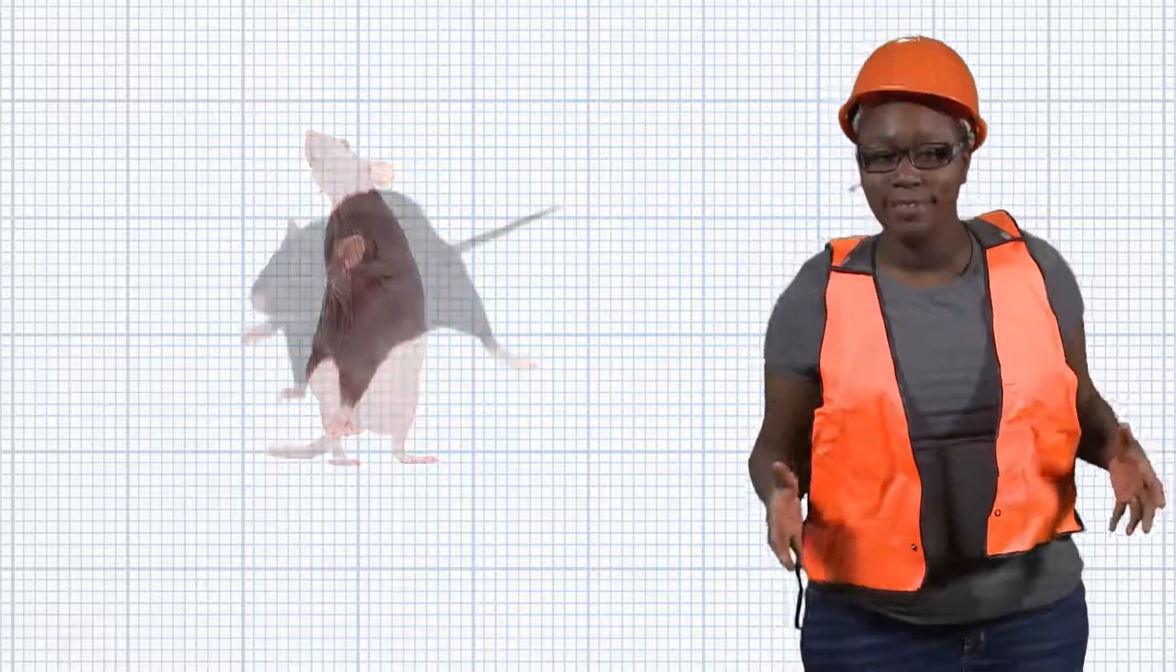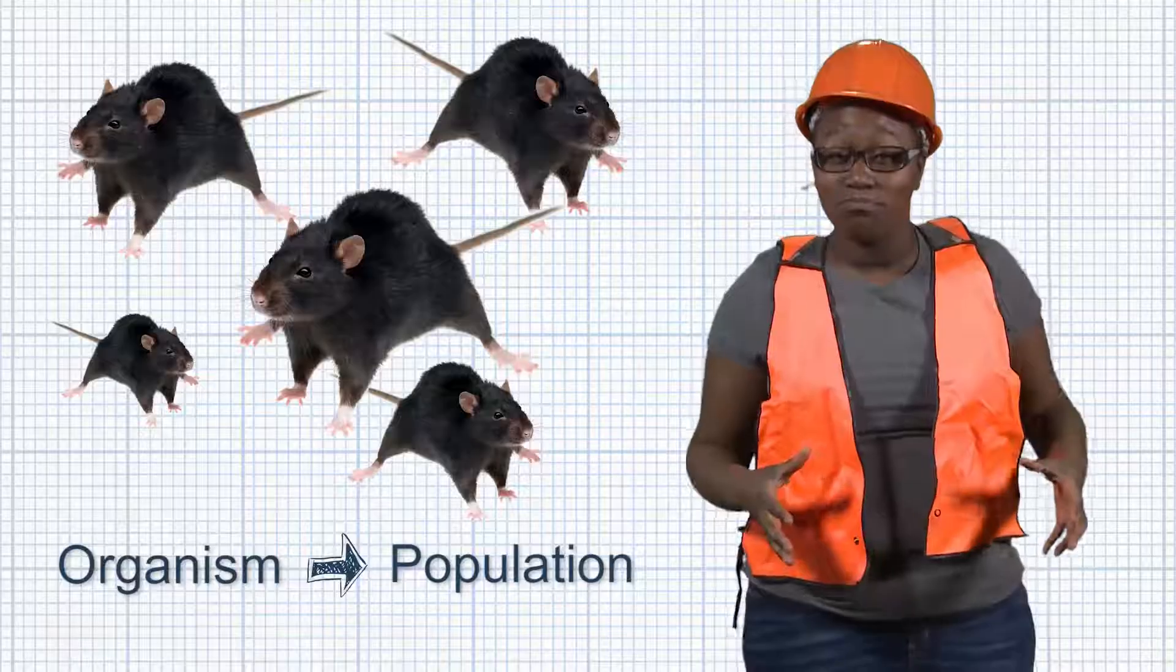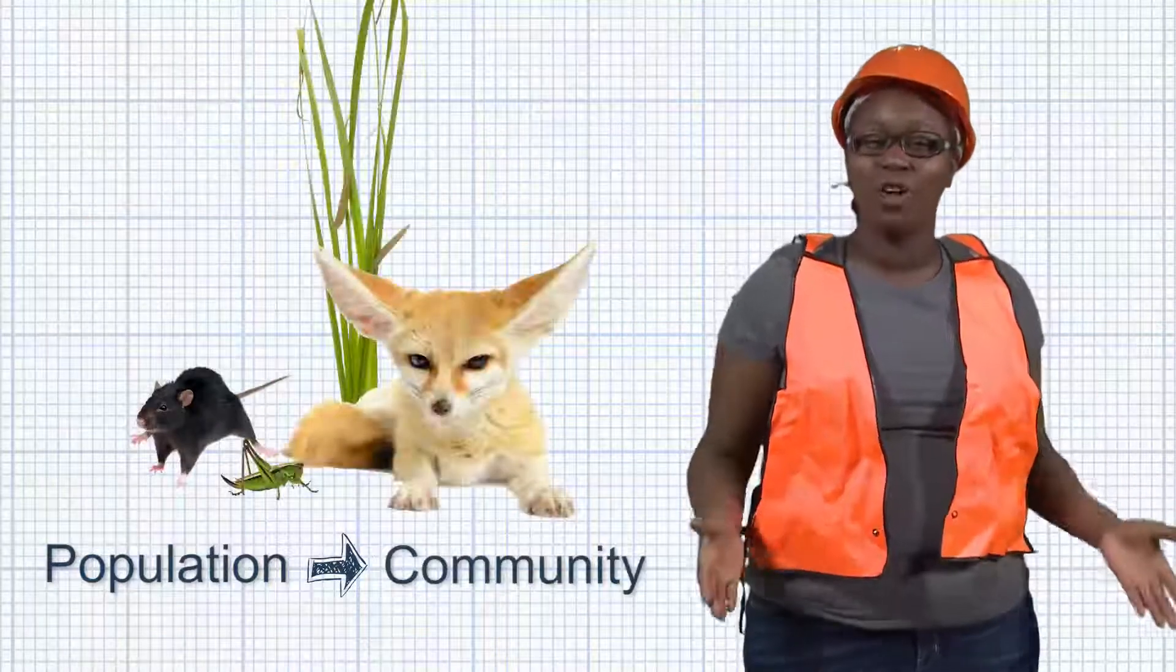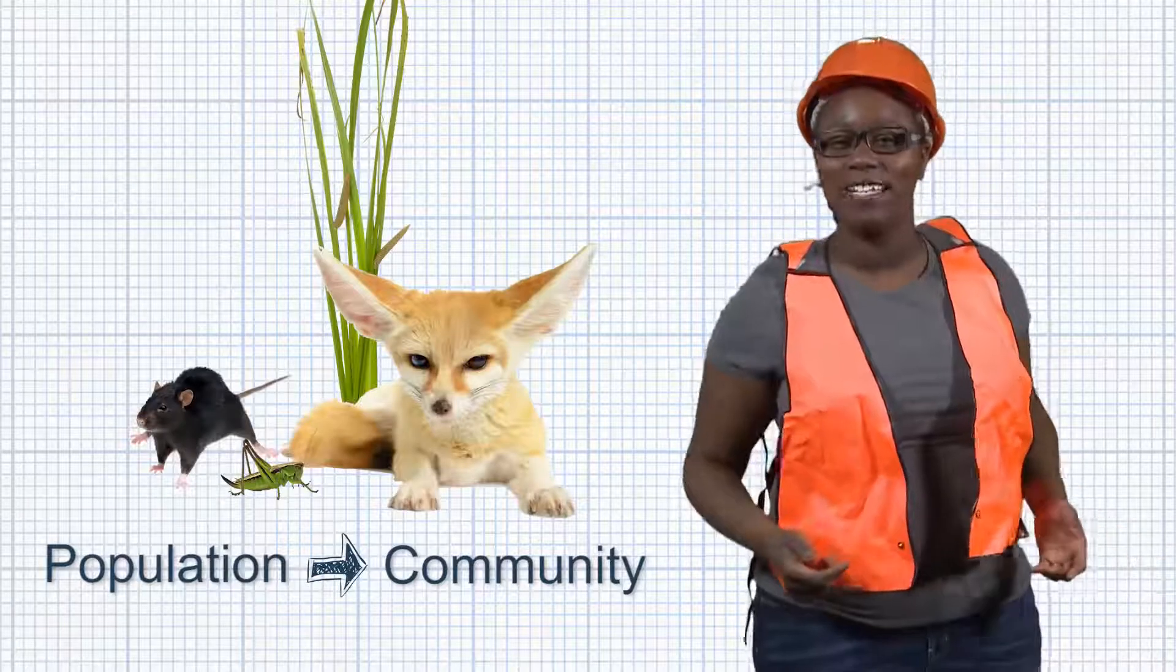Repeat steps one through eight until you got yourself a whole population. Then mix it up. Throw in some different types of organisms to make a community. To make a full-on ecosystem, add your own non-living parts.